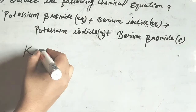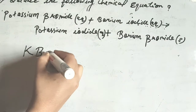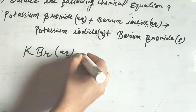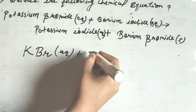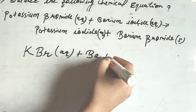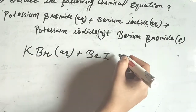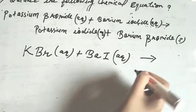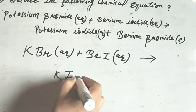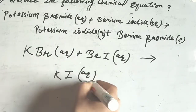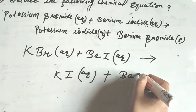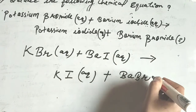The symbol of potassium is written as K. Bromide is written as Br in aqueous form. Barium is represented as Ba. Iodide is represented as I in aqueous form. On the product side, potassium is K, iodide is I in aqueous form, barium is Ba, and bromide is Br in solid form.